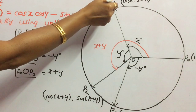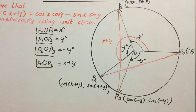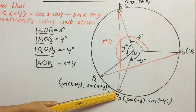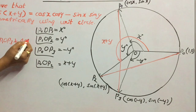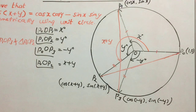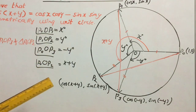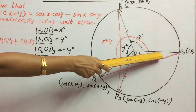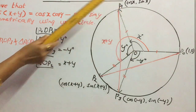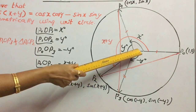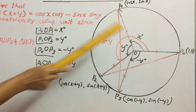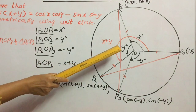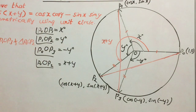Now let us consider two congruent triangles: triangle P1, O, P3 and triangle P0, O, P2. These two triangles are congruent by the SAS postulate — side, angle, side. Side OP0 equals side OP1, and side OP2 equals side OP3, because they are all radii of the same circle. The angle formed at center O is also equal. Therefore, triangle P1OP3 and triangle P0OP2 are congruent.